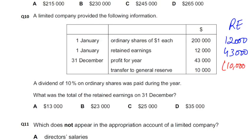Retained earnings will be reduced by 10%. 10% of 200,000 is 20,000, so this will be minus. Let's see how much money will come to our closing balance. Opening 12,000, plus 43,000 added, minus 10,000 and minus 20,000 — closing balance is 25,000.